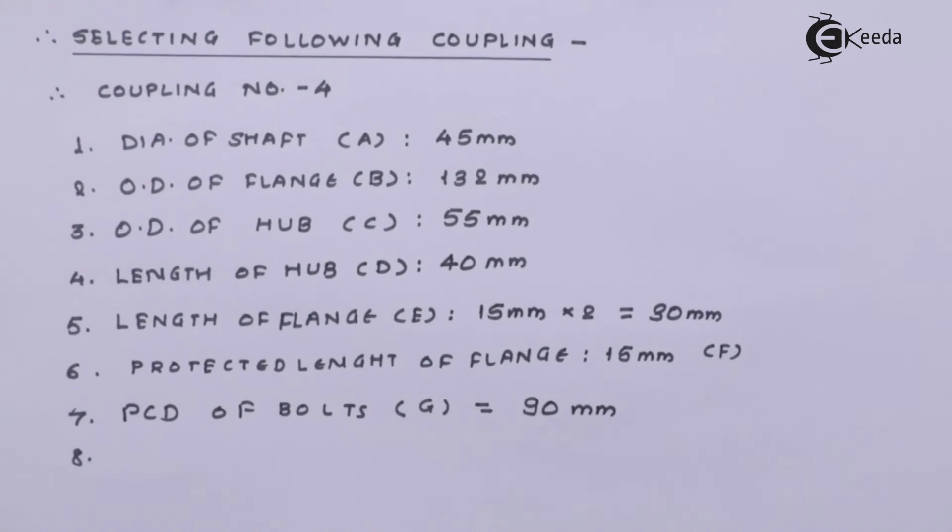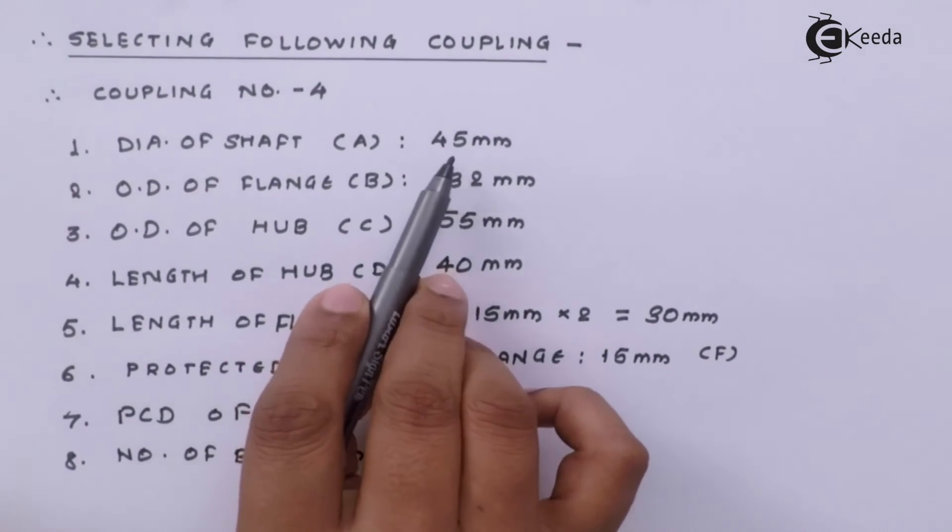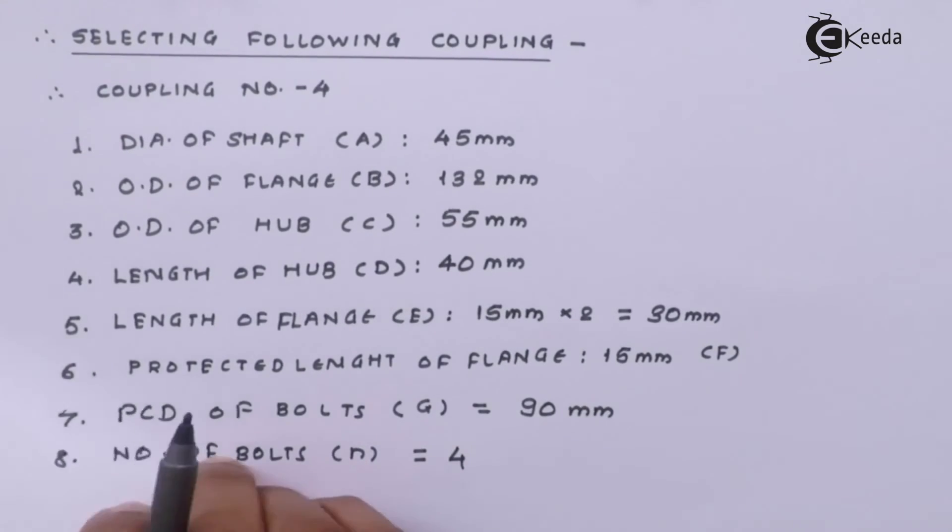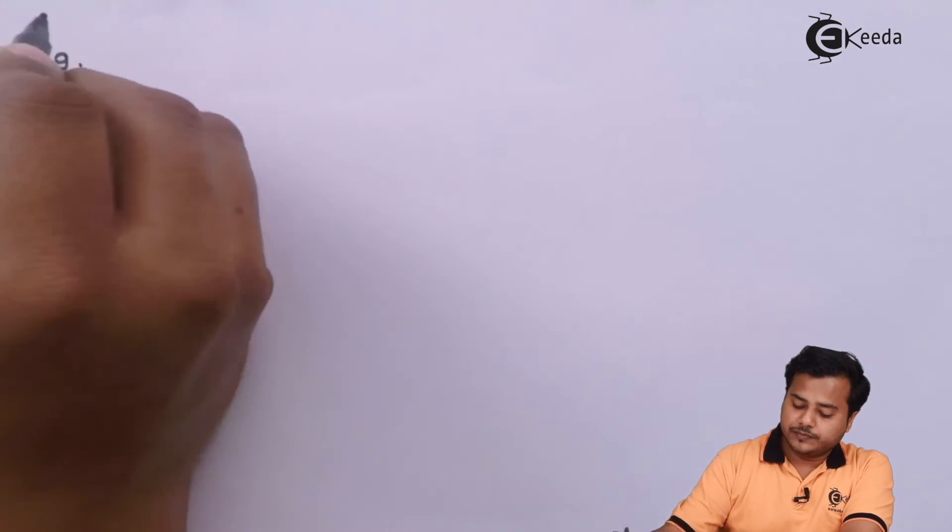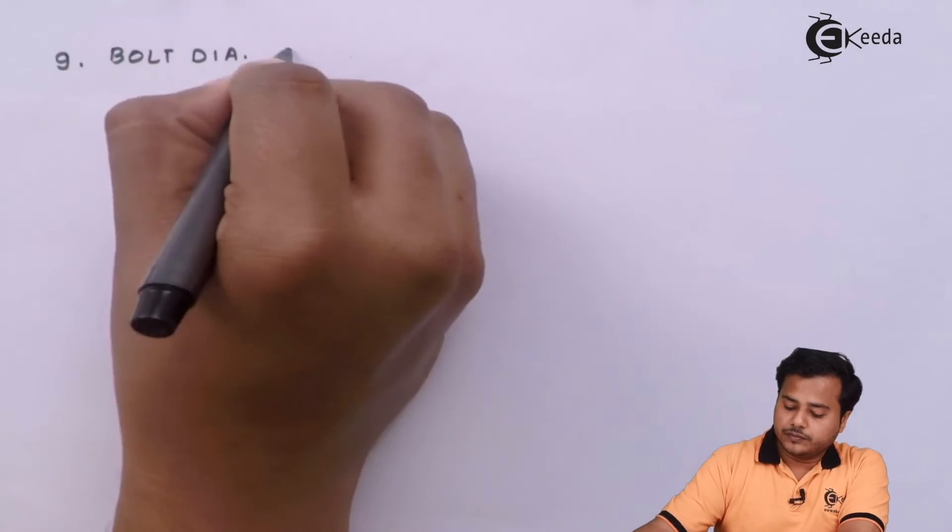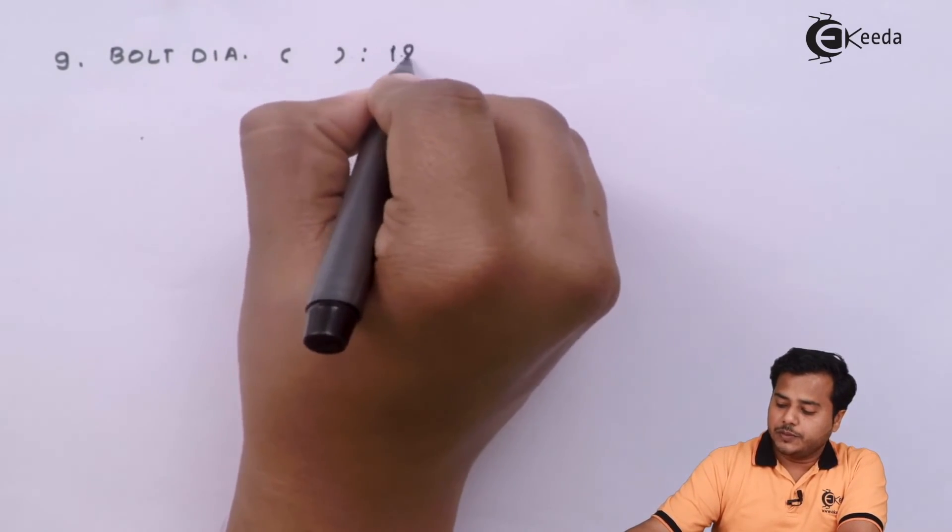Next parameter is the number of bolts small n. Now for the dimension of the shaft 45 millimeter which is smaller than 100 mm we can see number of bolts of 4. The next ninth dimension let us select is bolt diameter, let's say 12 millimeter.